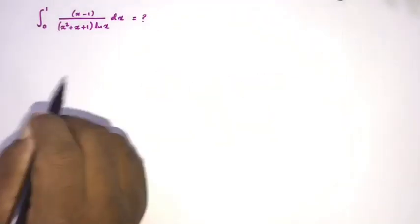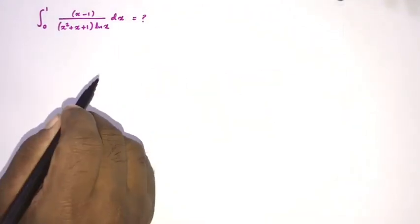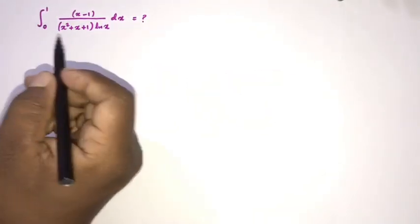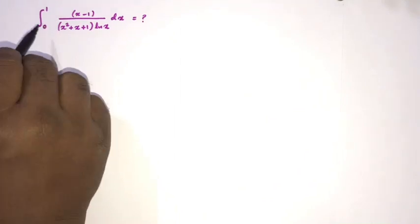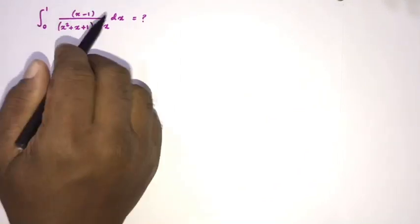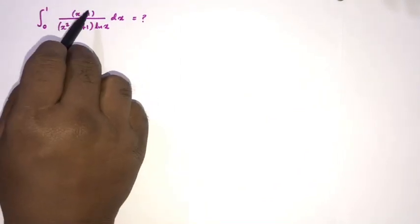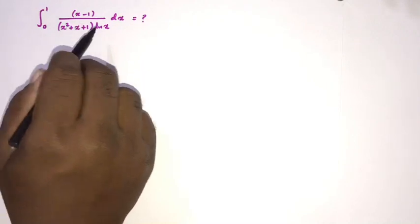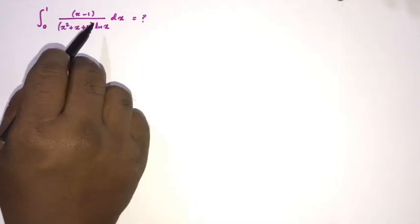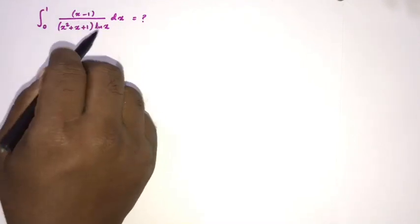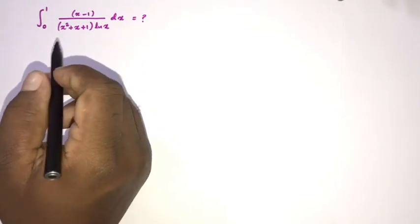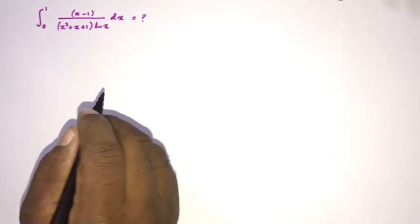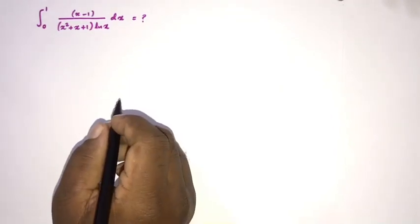Welcome to the Mathematics and My channel. We have another interesting integral: the integral from zero to one of (x minus one) over (x squared plus x plus one) times the natural log of x, dx. What is your approach?